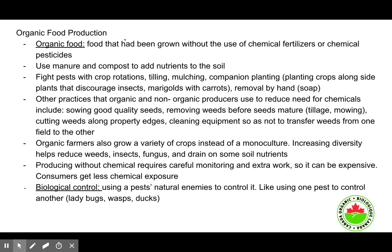Organic food is a hot topic these days. Organic food is food that has been grown without the use of chemical fertilizers or chemical pesticides. Organic farmers use manure and compost to add nutrients to the soil, and fight pests with crop rotation, tilling, mulching, and companion planting — like planting marigolds next to herbs in your herb garden, which actually keeps a lot of insects away.